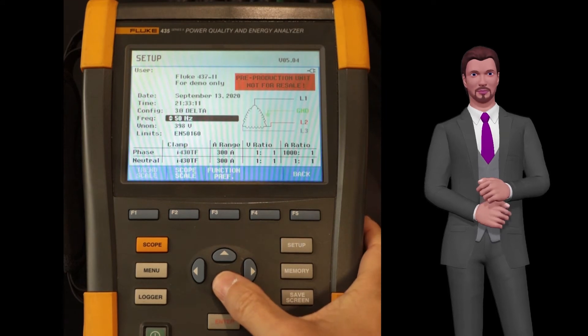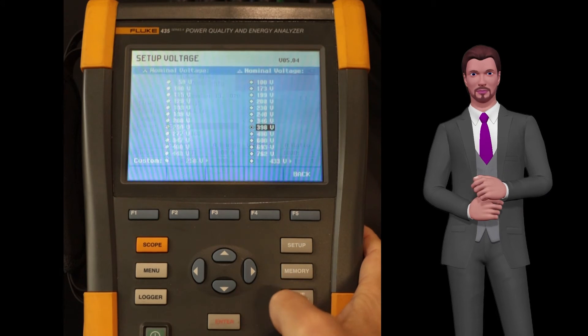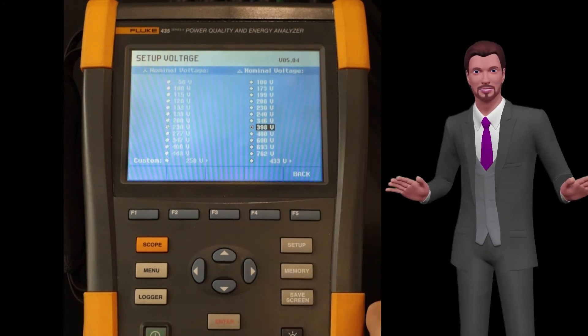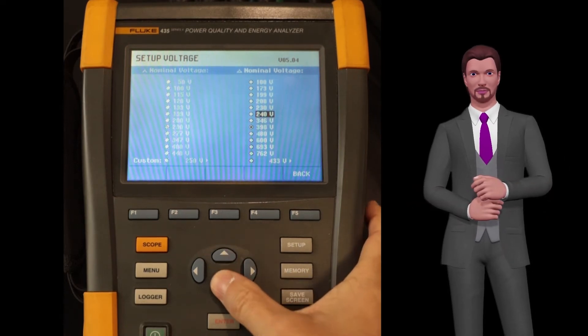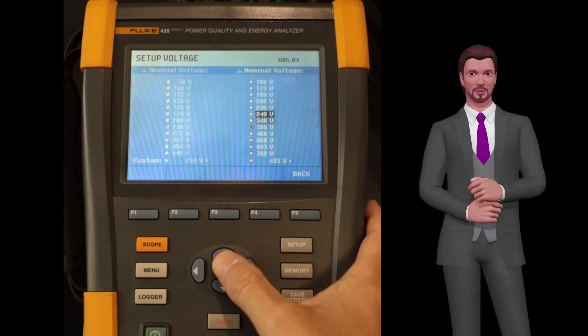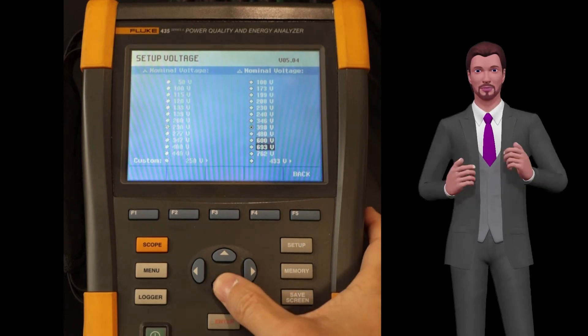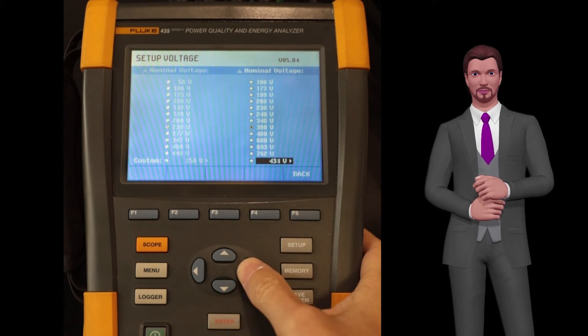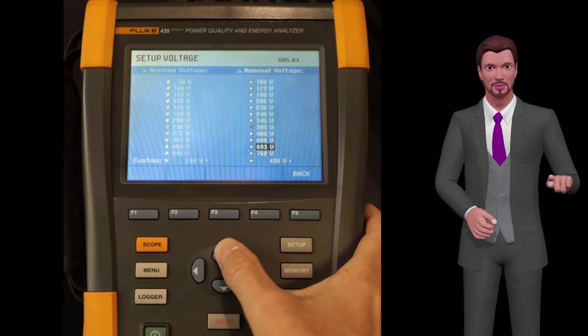Now we go down with the down arrow key to the option VNOM, to set the nominal voltage, and press enter. By default the voltage of 398 volts appears selected in the right column, but we can change it if we wish. Keep in mind that in this case, the value to be selected is the one corresponding to the nominal voltage between phases. If the values that appear do not match the nominal voltage of your network, then you can manually adjust it by moving down to the last position marked custom. In my case I leave it at 398 volts and press the F5 back key.